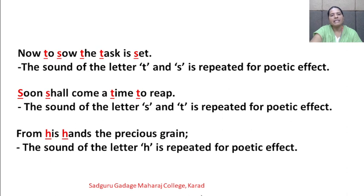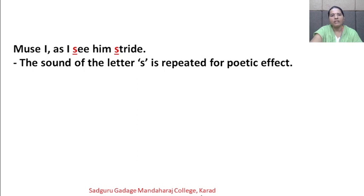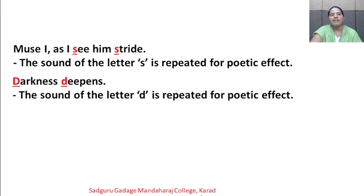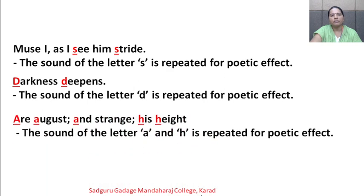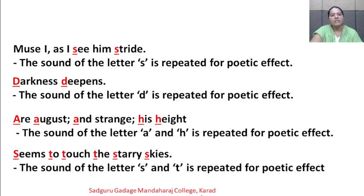Next: 'From his hands the precious grain' — the sound of H is repeated for poetic effect. Next: 'Muse I as I see him stride' — the sound of S is repeated for poetic effect. Next: 'Darkness deepens' — the sound of D is repeated for poetic effect. Next: 'August and strange his height' — the sounds of A and H are repeated for poetic effect. Next: 'Seem to touch the starry skies' — the sounds of S and T are repeated for poetic effect. These are the examples of alliteration from the poem.